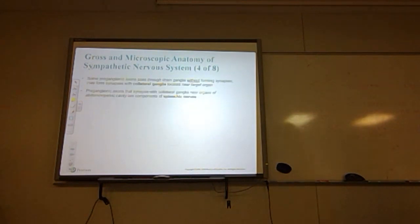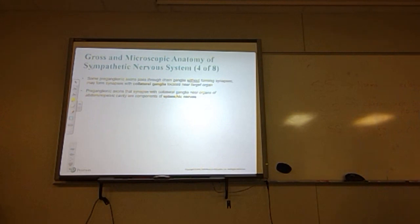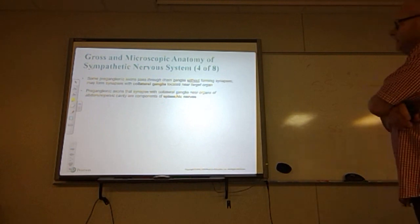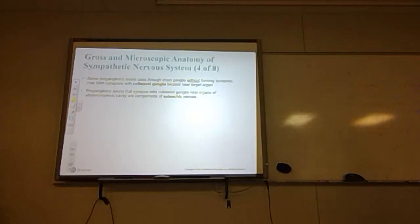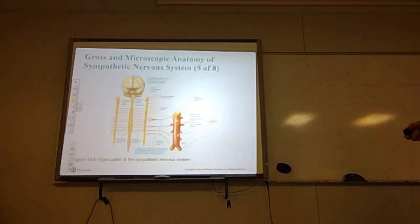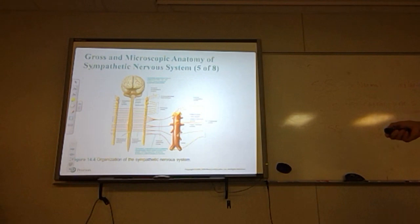Some pre-ganglionic axons pass through the chain ganglion without forming synapses; they may instead form a synapse with a collateral ganglion located near the target organ. The pre-ganglionic axons that synapse with collateral ganglia near the organs of the abdominal pelvic cavity are components of what is referred to as the splanchnic nerves. Here in the diagram are those connections showing the thoracic and lumbar vertebrae and their connections.